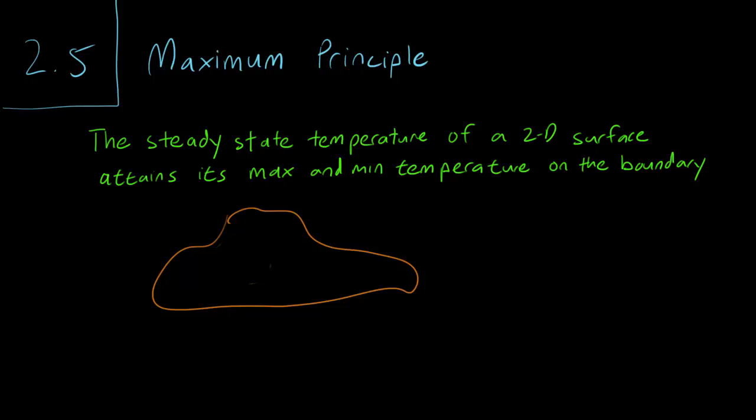Hello class, this is section 2.4, and in this video we are going to talk about the maximum principle. It's a very simple principle. It simply says that the steady state temperature of a 2D surface attains its maximum and minimum temperatures somewhere on the boundary.